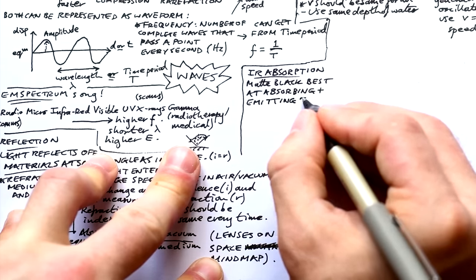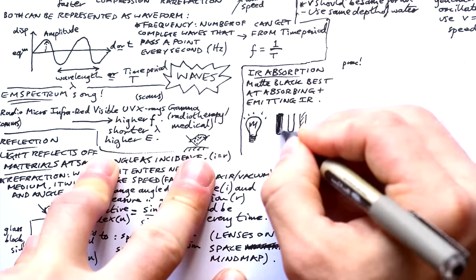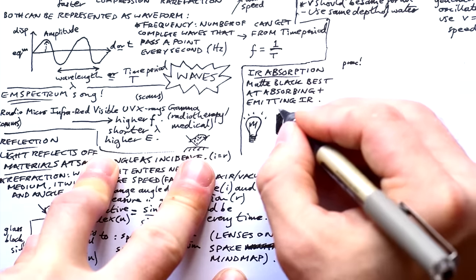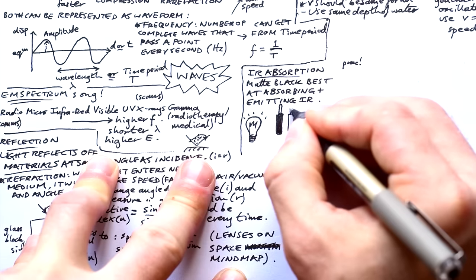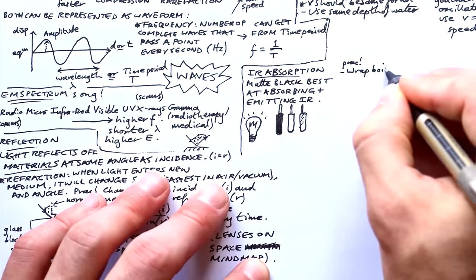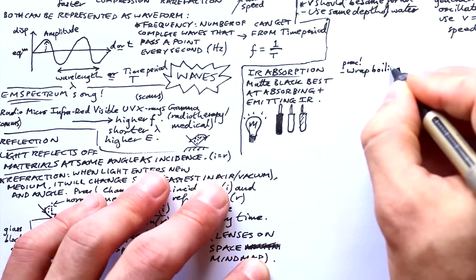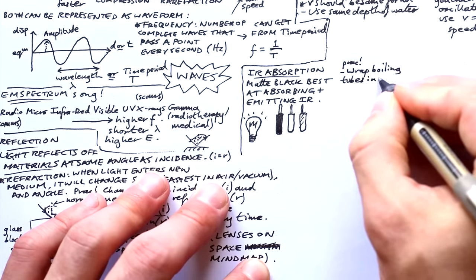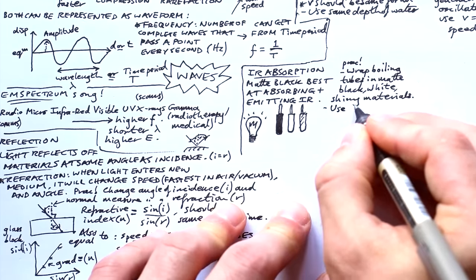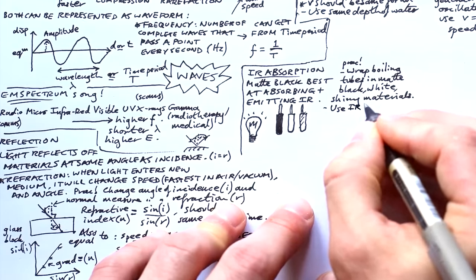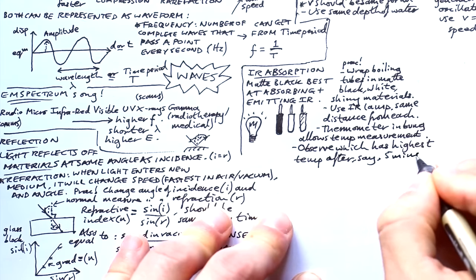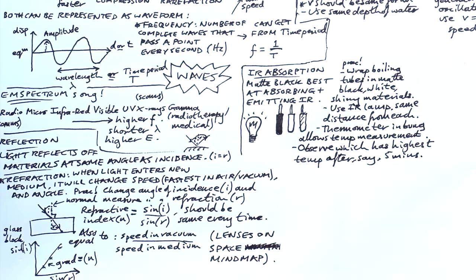Infrared absorption. Matte black materials are best at absorbing and emitting infrared, and we can carry out this prac to prove it. We get some boiling tubes and wrap them in matte black, matte white, and shiny materials. We have a bung in each, and a thermometer popping out the top. You want water inside these boiling tubes with the bulb of the thermometer in the water. We have an infrared lamp that's the same distance away from all of them. We turn it on, and then after five minutes, we record what the temperature is for each. We'll see that the matte black has the highest temperature.